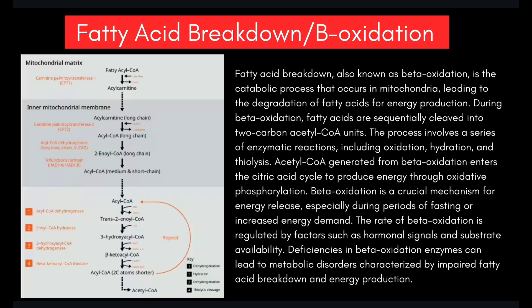Excessive beta oxidation, especially during fasting or low carbohydrate availability, can lead to the production of ketone bodies — acetoacetate and beta-hydroxybutyrate — in the liver. Disorders in beta oxidation enzymes can result in metabolic diseases such as fatty acid oxidation disorders (FAODs), leading to symptoms like hypoglycemia and muscle weakness. Make sure you know that fatty acids need to be transported into the mitochondria for beta oxidation, facilitated by the carnitine shuttle.